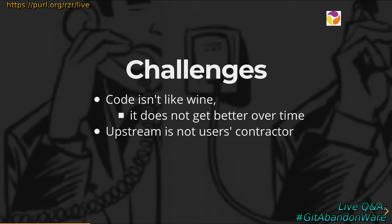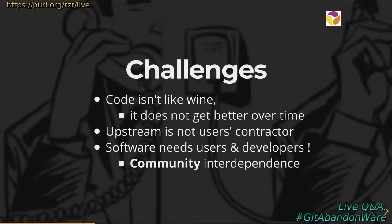Or even better, have some open source developers inside your company. Software needs users and developers, and developers need software — it's a kind of loop. What I like to say is that there is a community interdependence. Everybody has to establish a both-way relationship and not operate in a producer-and-consumer model.